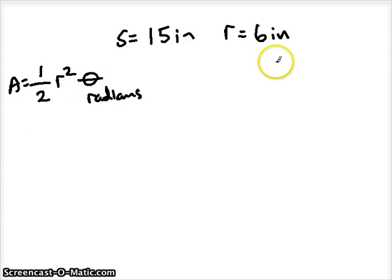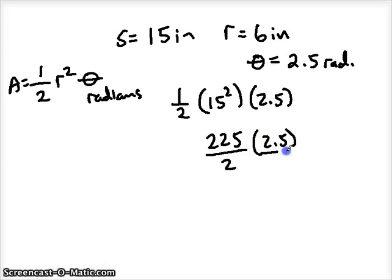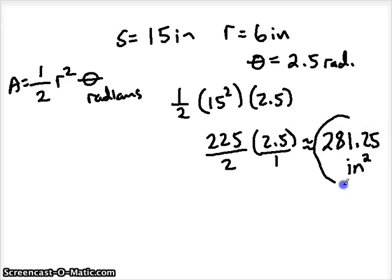We can find the area of the sector using that formula. We discovered that our angle measurement in radians was about 2.5. So all we need to do is plug things into our formula. Just some Algebra 1 skills there, and we should be able to find the area of that sector. So 1 half times 6 squared times 2.5. 6 squared is 36. And if I divide that by 2 and multiply by 2.5, we get approximately... wait, let me recalculate. We get approximately 281.25 inches squared. That's the area of that pie piece that we talked about earlier.